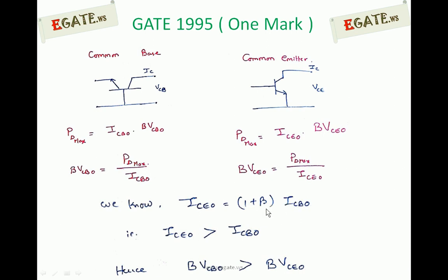ICEO is one plus beta times ICBO. It is also called IC0. So ICEO is larger than ICBO. The numerator is the same. Denominator for common emitter is larger.